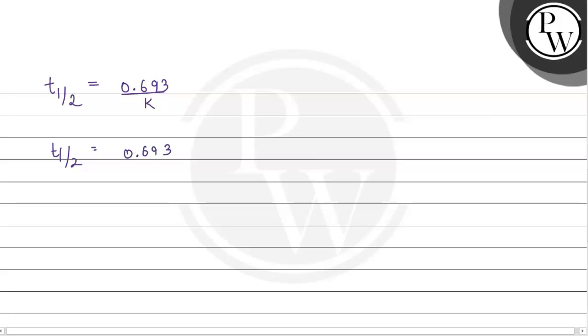So 0.693 divided by 0.02876 equals, on calculating, 24.096 seconds, and this is approximately equals to 24.1 seconds.